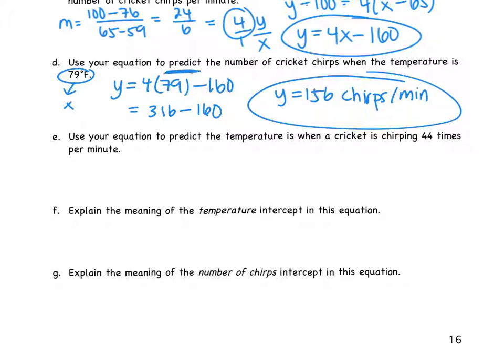This is just a prediction. Okay, so do you think that when it's 79 degrees, every single cricket chirps 156 times a minute? No. No. It's about the average. It's the average. That's what we're talking about.